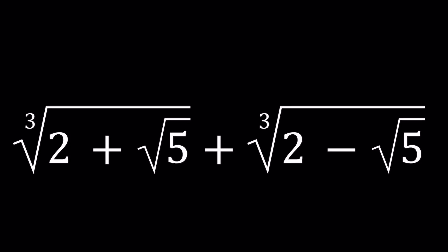Hello everyone. In this video, we're going to be simplifying a radical expression. We have the cube root of 2 plus root 5 plus the cube root of 2 minus root 5, and we're going to simplify this as much as possible. I'll be presenting two methods, and there's something interesting about the solution to this problem.